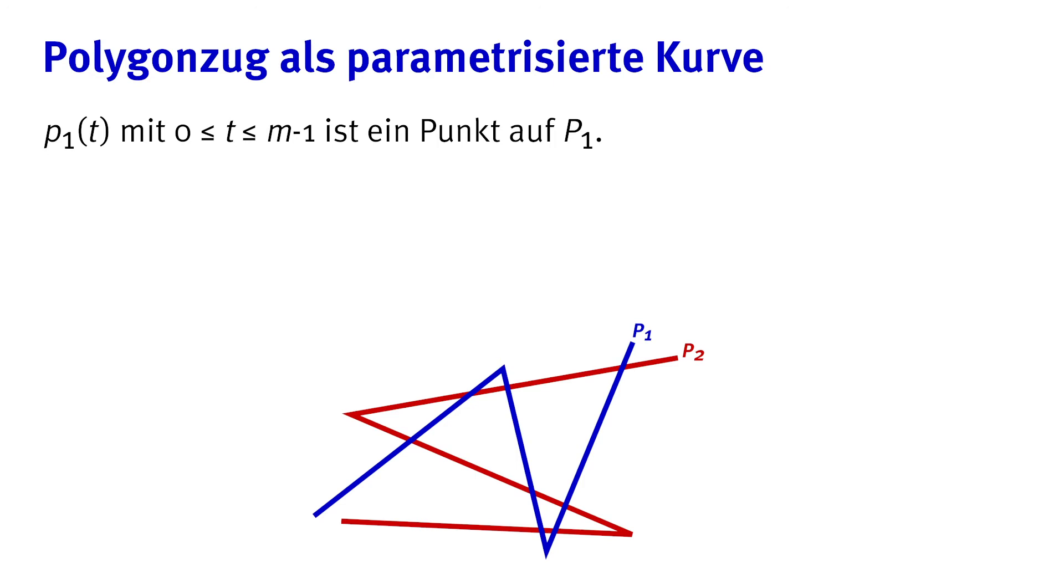So p1 of 0 is the first vertex and this really shouldn't be confusing to us as computer scientists because we start a lot of things at 0 anyway. And for non-integer t it is the linear interpolation just like before.